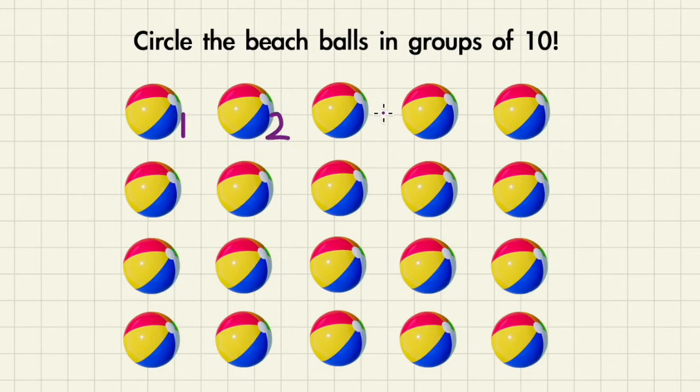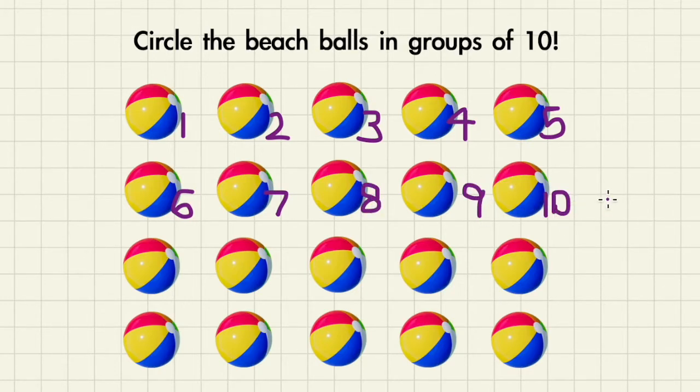1, 2, 3, 4, 5, 6, 7, 8, 9, 10. So that will be our group 1. Let's circle that.